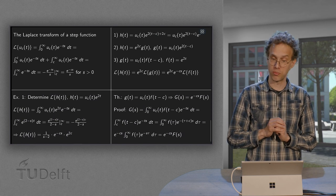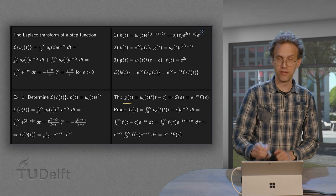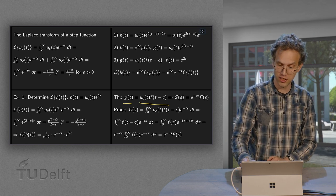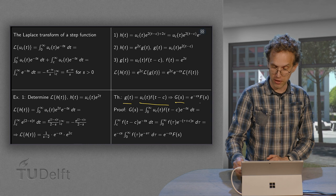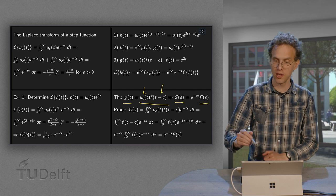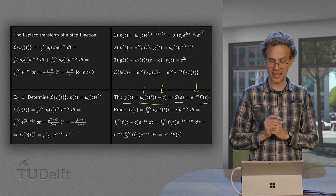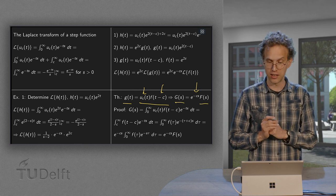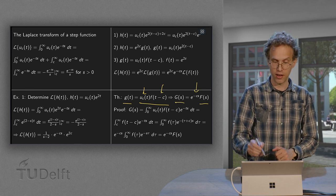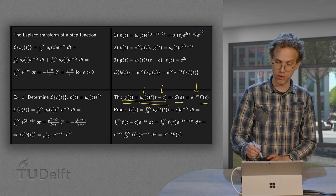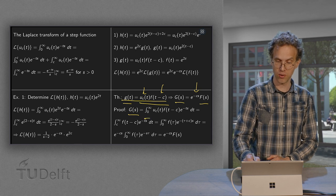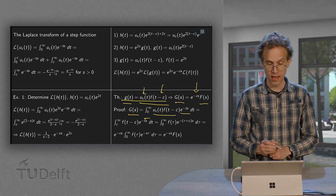This holds in general. If g(t) = u_c(t)·f(t-c) for some shifted function f, then the Laplace transform G(s) equals e^{-cs} times the Laplace transform F(s). The u_c with the (t-c) shift simply adds the factor e^{-cs}. The proof of this general formula is straightforward: G(s) equals the integral of g(t)·e^{-st} dt.